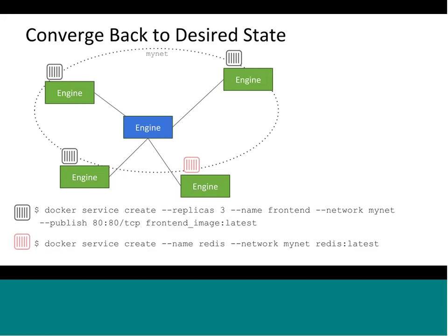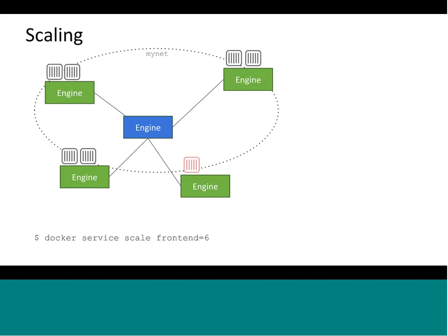When you use the Docker service command, you're not just doing a one-shot operation like Docker run. You're declaring a desired state for the cluster, and the cluster will maintain that state until you give it a new desired state. One example is scaling: we have a Docker service scale subcommand — in this case specifying six replicas for the frontend container. Previously we had three; now we have a total of six.